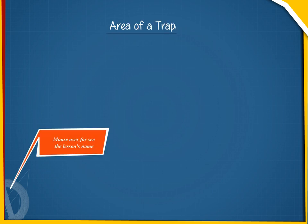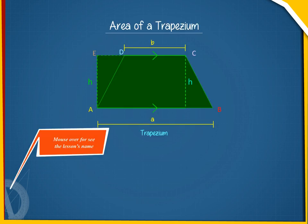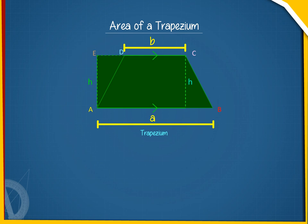Area of a trapezium. A trapezium is a quadrilateral in which only two opposite sides are parallel.